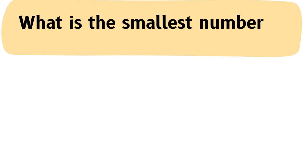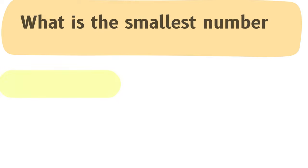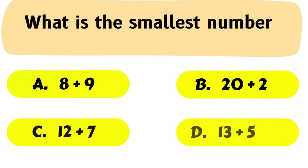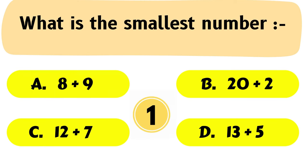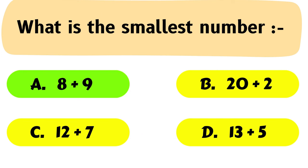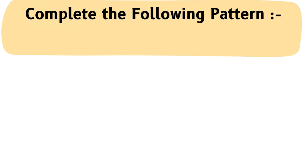Question No. 10: What is the smallest number? A. 8 plus 9, B. 20 plus 2, C. 12 plus 7, D. 13 plus 5. The correct answer is Option A: 8 plus 9.